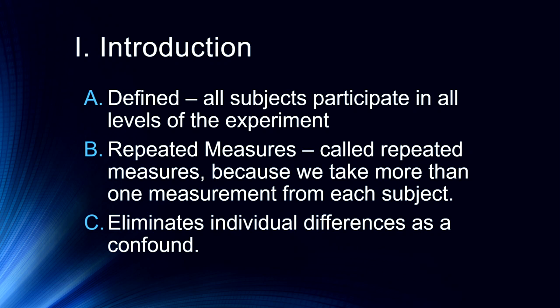This has a distinct advantage over between-subjects designs because it eliminates individual differences as a confound — there can't be differences between groups because we only have one group. However, we do have to think carefully about how we structure a repeated measures design, especially if we're testing people a week apart, once in a placebo condition and once in a drug condition, or once when they're smoking regularly versus abstaining. In other research, we're testing people eight weeks apart, so we have to carefully think about potential differences in those individuals across those timeframes.